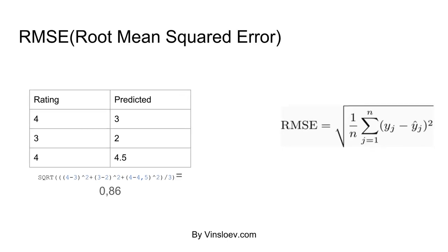The other score is the root mean squared error (RMSE), which penalizes larger errors a lot more. Using the exact same values, the formula takes yj — for example 4 minus 3 — squares each difference, sums them together, so: (4 minus 3) squared plus (3 minus 2) squared, and so on. Then we divide by the overall number of values and take the square root of the entire result.